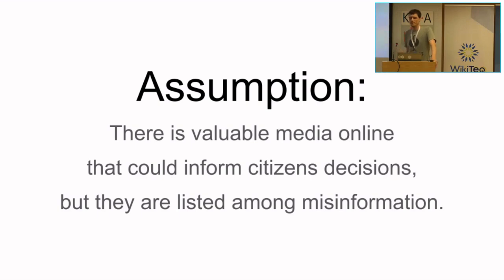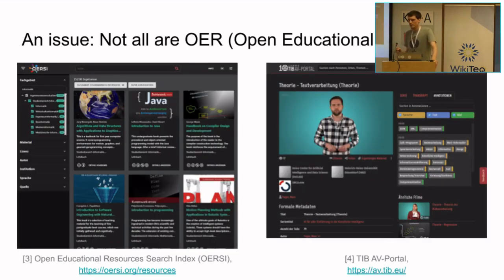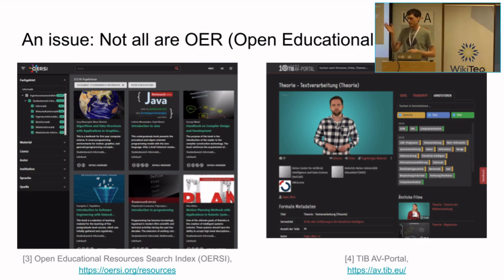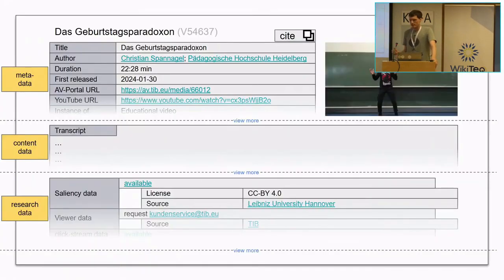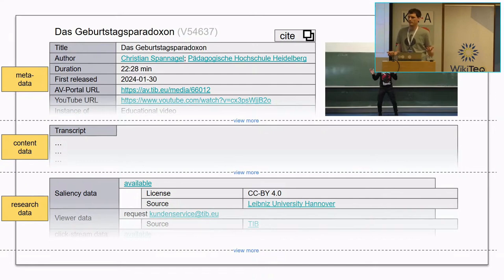The assumption is that there's valuable media online that could inform citizens, but they are listed among misinformation. Another issue: not all science videos are open educational resources. I would consider the problem of open educational resources somewhat solved — there's the open educational research search index, there's something like TIB AV-Portal, all of those are solved. But I don't think that the video of that two-hour guy would be listed as an open educational resource. I don't think the person who made the video even knows about the concept. So how do we connect the one with the other? My approach is to curate all the data that is already out there, and also approach the people and say: here, we can highlight your content, but it would be even better if you put a license on it. So we just be the middleman between the open educational resource space and the people who are actually putting out the videos.